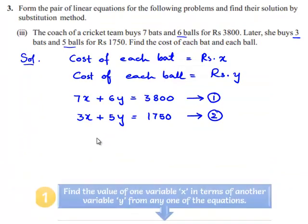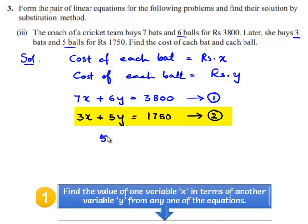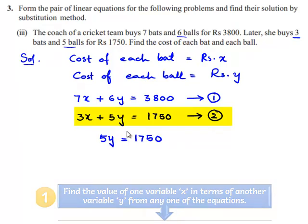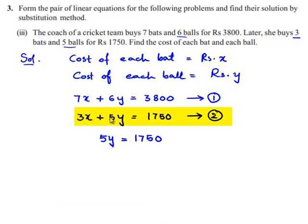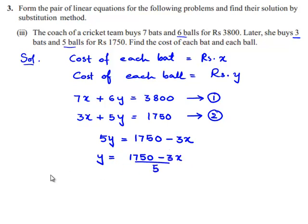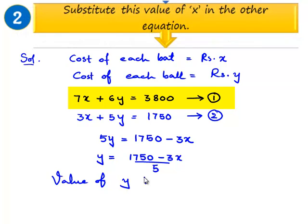Equation number 2 can be written as 5y is equal to 1750 minus 3x, by transposing 3x to the right-hand side. So y is equal to 1750 minus 3x, divided by 5. Let us substitute the value of y in equation number 1.